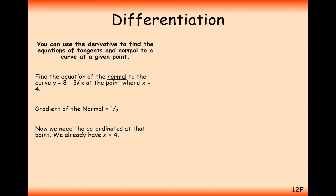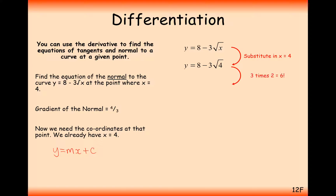That's the difference between this question and the tangent question — we just need to flip and negate the gradient to get the gradient of the normal. To plug it into y equals mx plus c, we need an m value, an x value, and a y value. We don't have the y value yet, so we substitute 4 into the original function to get the y coordinate, which gives y equals 2. So the coordinate we're working with is (4, 2).